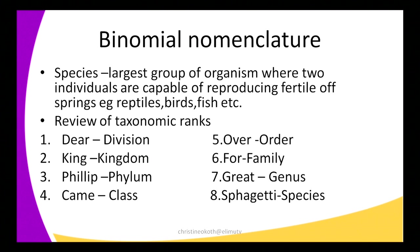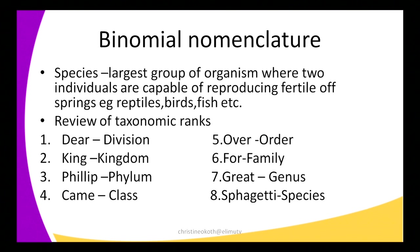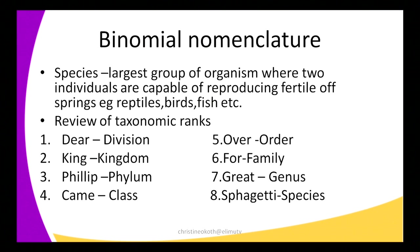So having defined genus, we now define species. What is a species? This is the largest group of organisms where two individuals are capable of reproducing fertile offspring. For example, we have reptiles, birds, and fish. The keywords here are reproducing fertile offspring. This group can intermingle and produce fertile offspring.